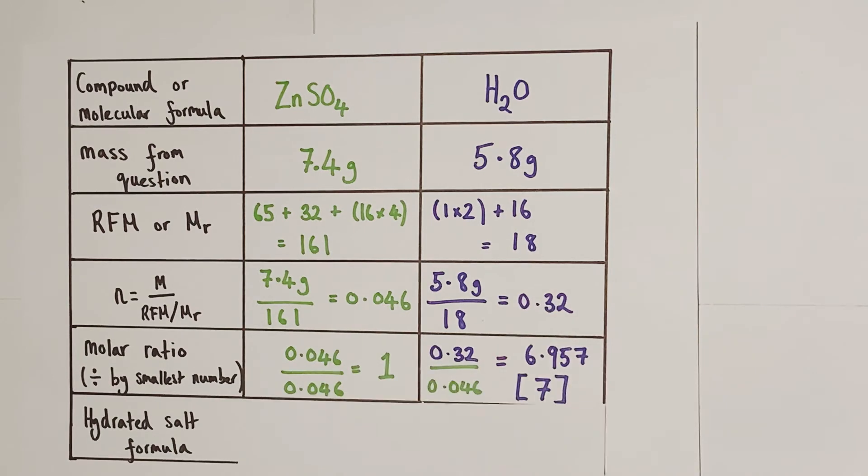So if we divide 0.046 by itself, of course it's going to give us one, but if we divide 0.32, the large number, by 0.046, the small number, we get out the value 6.957. That's so incredibly close to the whole number seven we are allowed to round up to the nearest whole number if it is really close like that. So we make it seven.